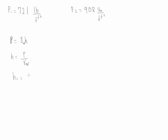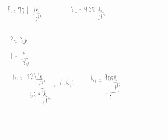Let's do the process for pressure one. h1 is going to be 721 pounds per square foot divided by the gamma of water which is 62.4 pounds per cubic foot, giving us 11.6 feet. Notice that head is in terms of distance. Following the same process, h2 is 908 pounds per square foot divided by 62.4 pounds per cubic foot, which gives us 14.6 feet. Please go back and do the calculations again to make sure you understand how to calculate pressures and convert them into head of a particular fluid.